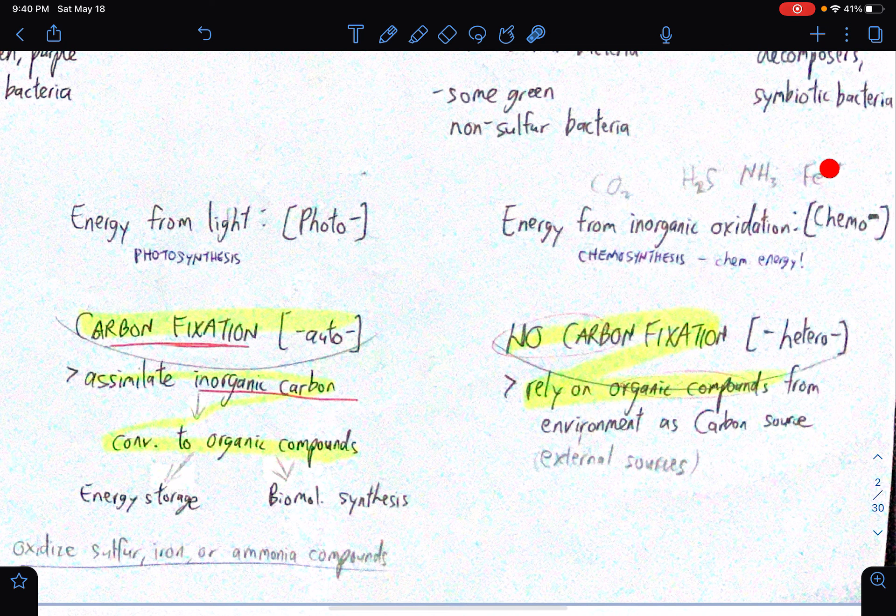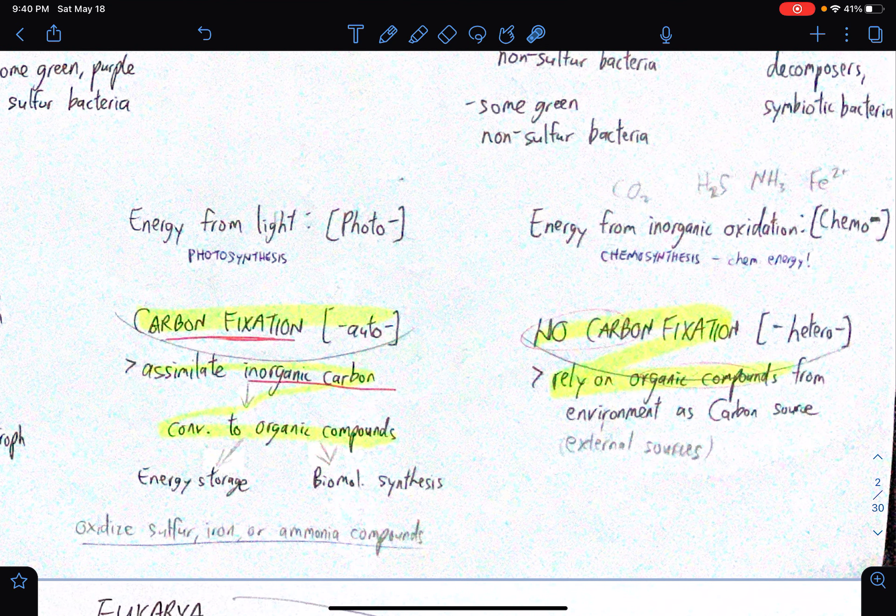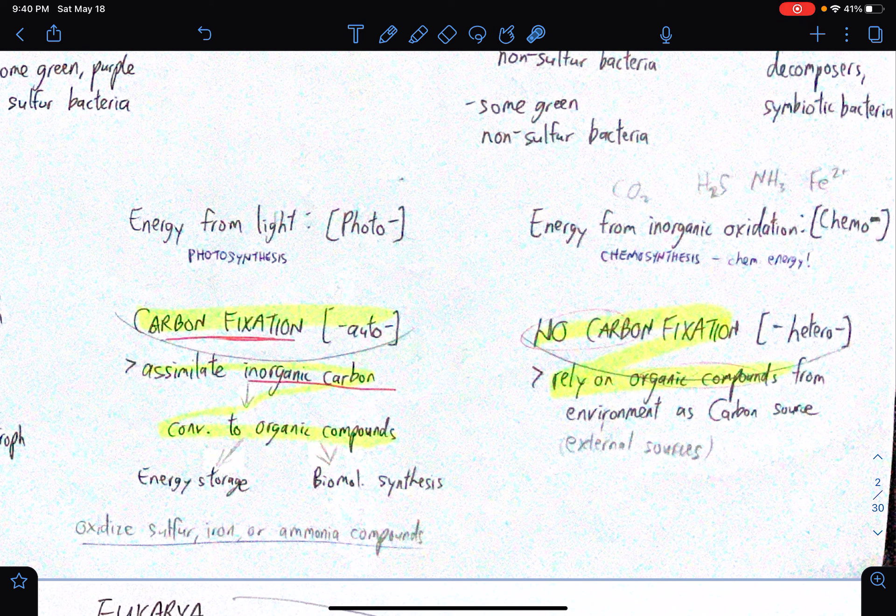So yes, I suppose these are the most common sources of energy. For chemo-synthesis, I think that's the reason why I wrote these random symbols of compounds. Okay, so what does it mean if a prokaryote undergoes carbon fixation? So they assimilate inorganic carbon conversion to organic compounds. So what are these organic compounds?